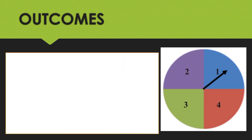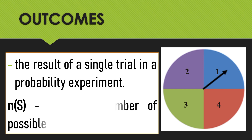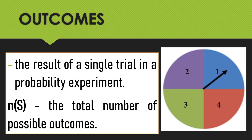Next, we have outcomes. When we are talking about outcomes, it is the result of a single trial in a probability experiment. The total number of possible outcomes is denoted by N(S) — that is, N, open parenthesis, S, close parenthesis — meaning the total number of possible outcomes.